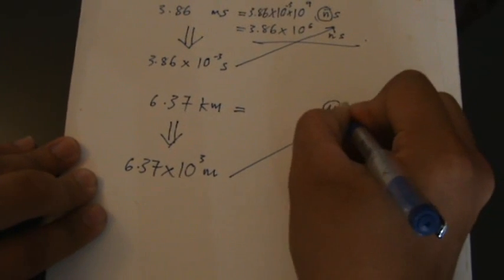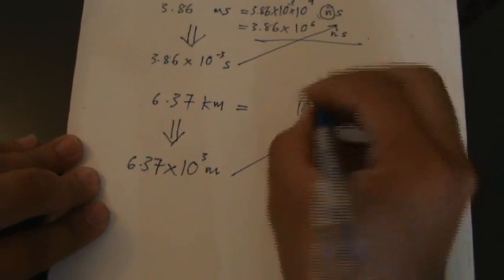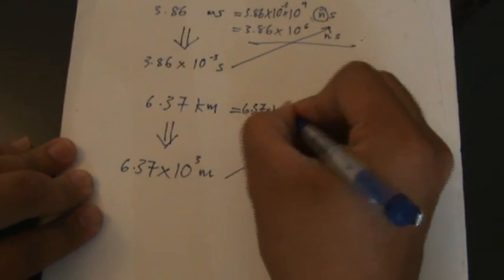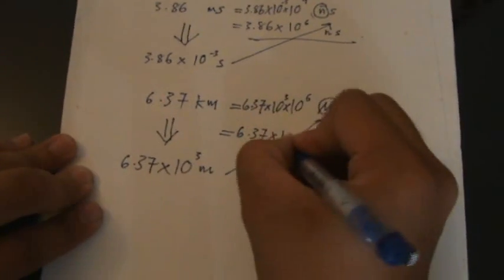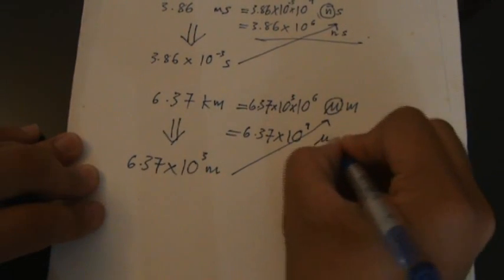You want to create micro. Micro is negative 6, so I put 10 to the 6. So I put in my original value of 6.37 times 10 power of 3 times 10 to the 6, so I get 6.37 times 10 power of—negative 9—I mean positive 9 micrometers.